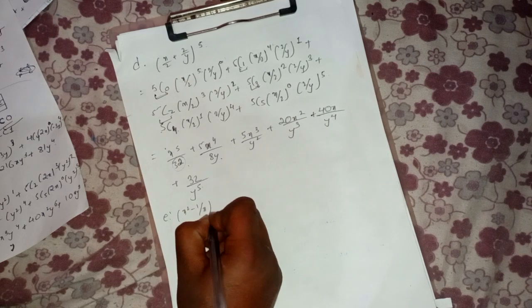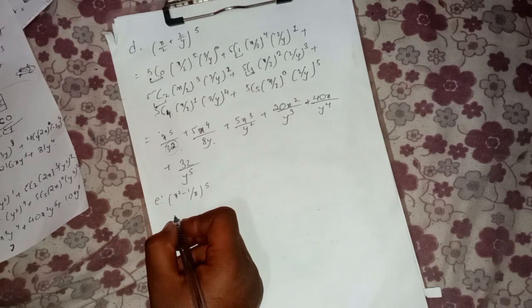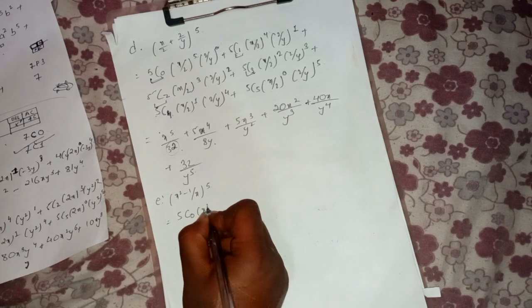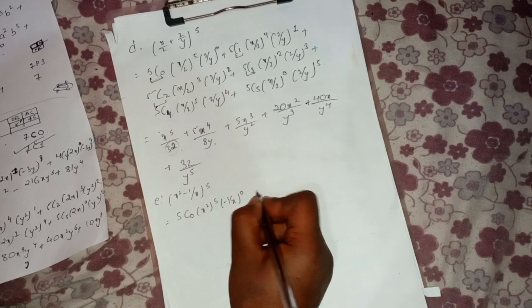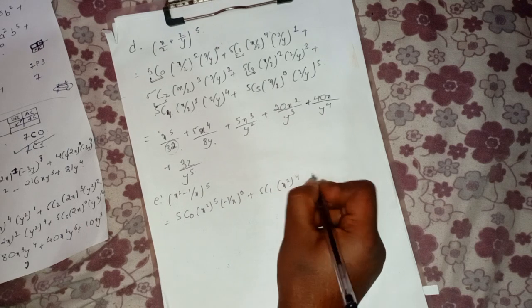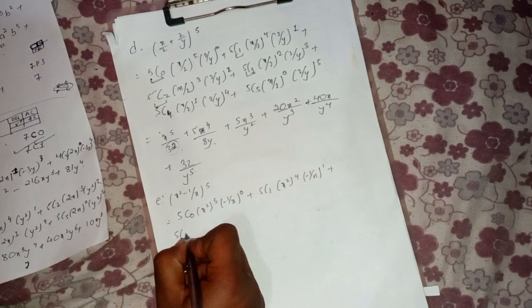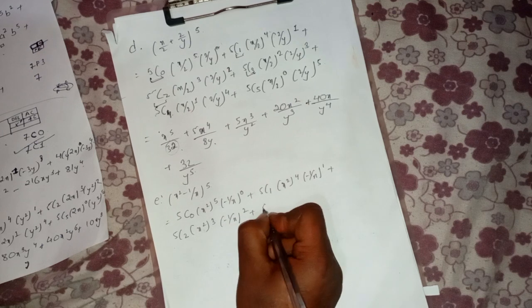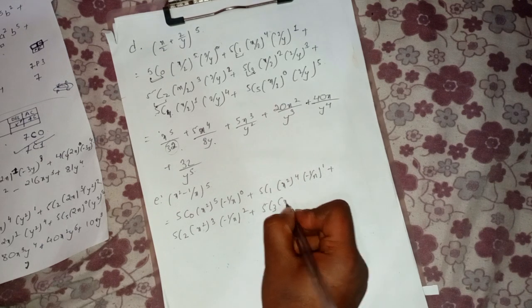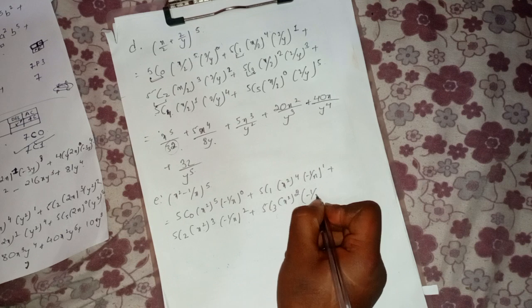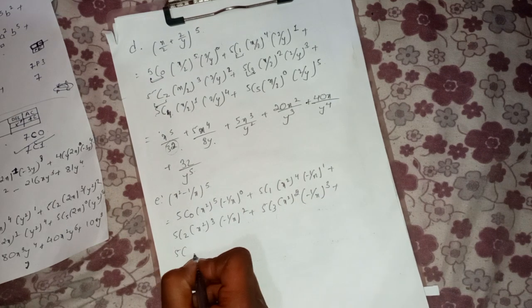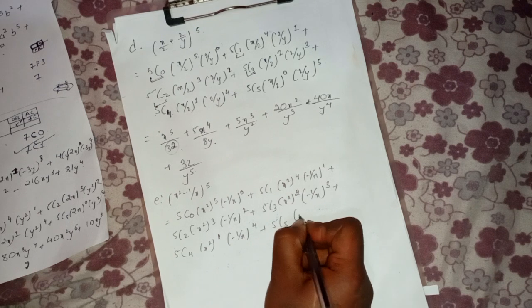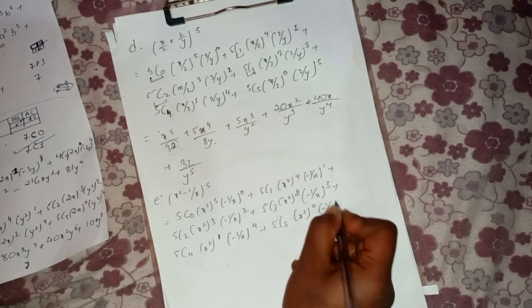Now expand (x² - 1/x)^5. We apply the binomial theorem with n = 5: 5C0·(x²)^5·(-1/x)^0 + ... + 5C4·(x²)^1·(-1/x)^4 + 5C5·(x²)^0·(-1/x)^5.